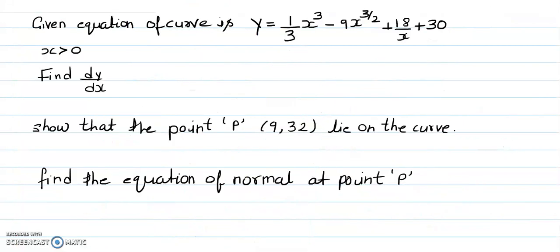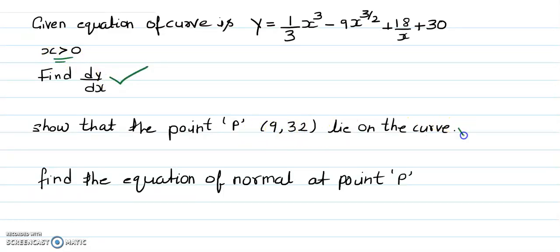Let's see another question. The given equation of a curve is (1/3)x cubed minus 9x to the power 3 over 2 plus 18x, where x is greater than 0. Find dy by dx and show that the point P(9, 32) lies on the curve, and find the equation of a normal at that point. Pause the video and have a go, then check your working against mine.